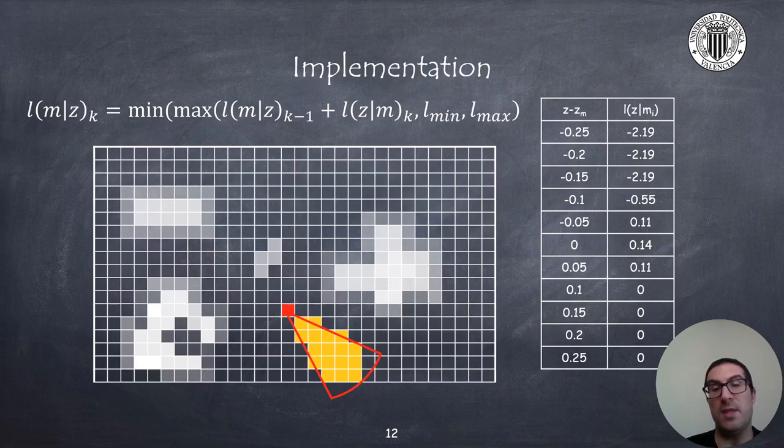Also, notice that in the Bayes rule update, I have included some saturation functions so that the values are always between a minimum value L_min and a maximum value L_max. This will be a truncated likelihood, but the advantage is that in case we are moving in dynamic environments, the changes will reflect much faster, since we are avoiding the integration of those values over time.